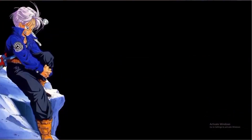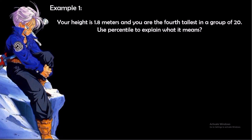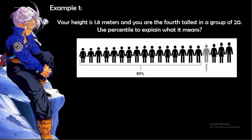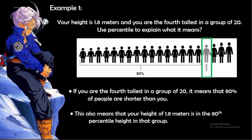Example 1: Your height is 1.5 meters and you are the 4th tallest in a group of 20. If you are the 4th tallest in a group of 20, it means that 80% of the people are shorter than you. This also means that your height of 1.5 meters is in the 80th percentile for height in that group.